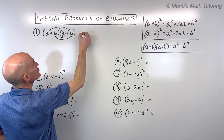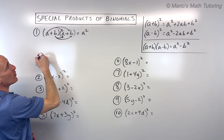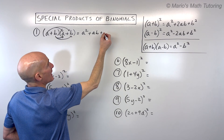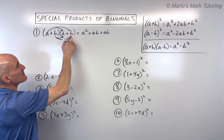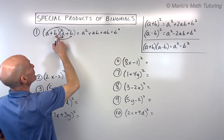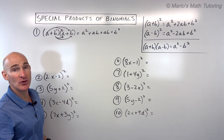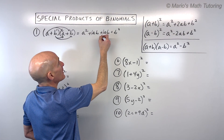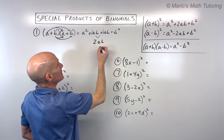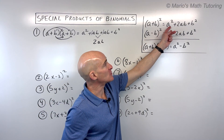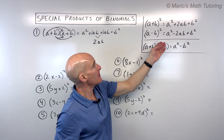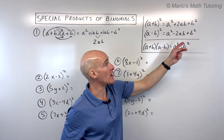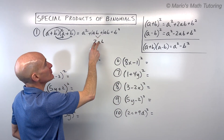We get a times a, which is a squared — when you multiply, you add the exponents. a times b gives us ab. Then b times a, which is also ab since multiplication is commutative, and b times b gives us b squared. Notice we have ab plus ab, which is two ab. So the pattern is a squared plus 2ab plus b squared. And if you have a minus b, you get a squared minus 2ab plus b squared. The two appears because you have two of that same middle term.